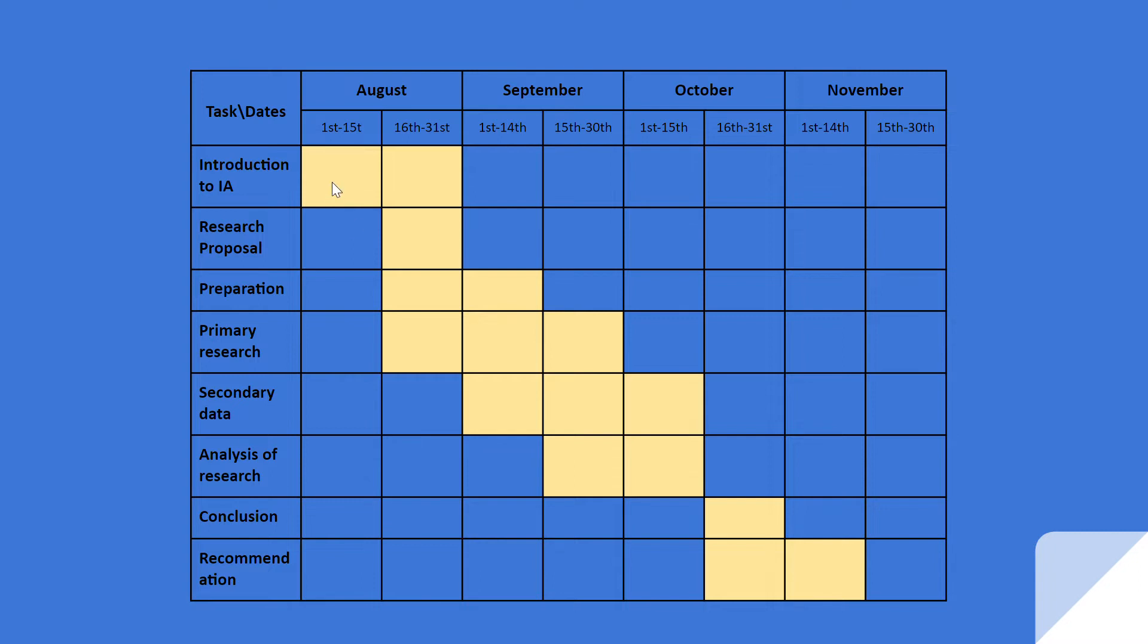This is meant so the introduction to my IA and the research proposal could be done and worked on at the same time. But for example, you can clearly see that for me to be able to start with the conclusion, I will have to have done the full analysis of my research, as you can see here with the boxes.